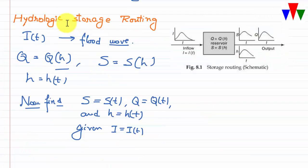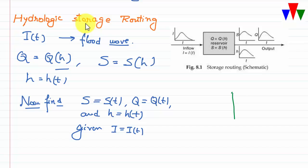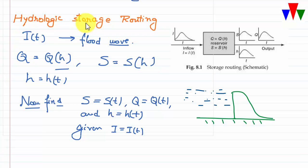In hydrologic storage routing we use a level pool routing concept — the water level is assumed horizontal. In this case storage is a function of elevation only. Suppose we have a weir or spillway and water is stored behind this structure. We can say that storage in this type of structure is a function of height h, and from the water level we can determine how much water is stored.